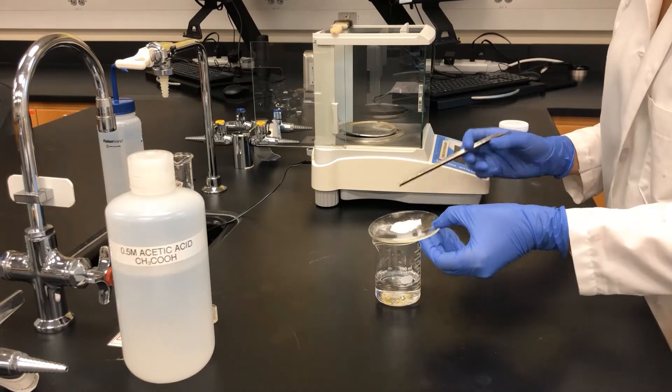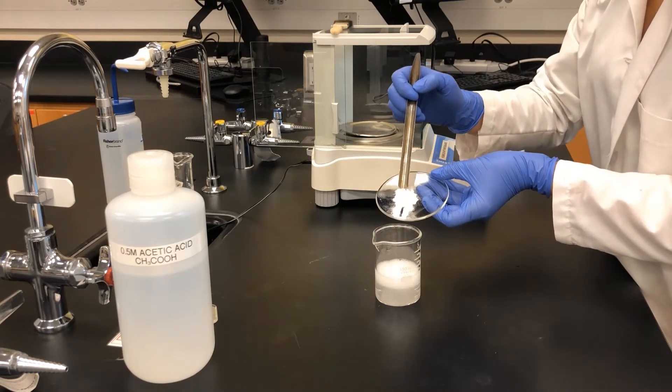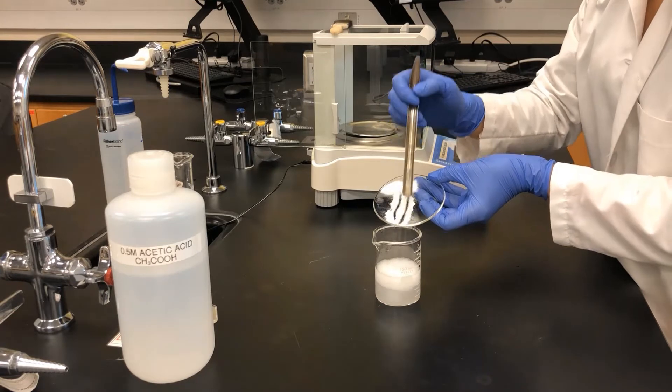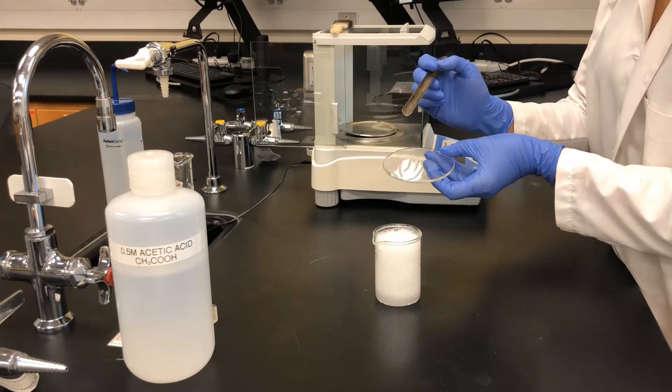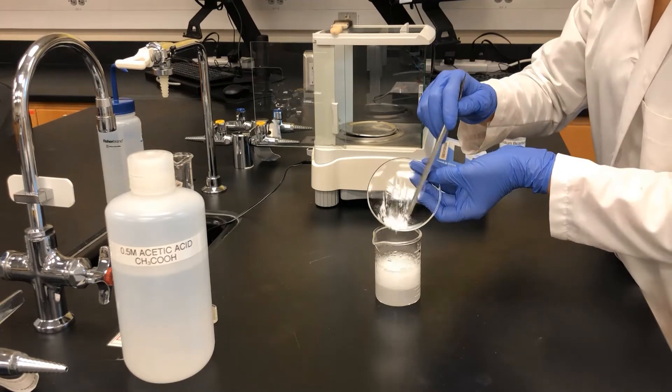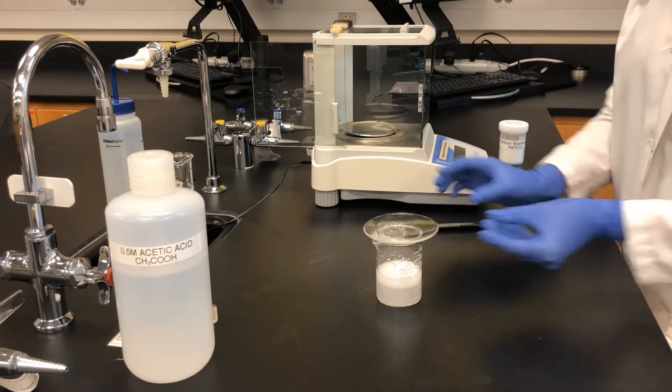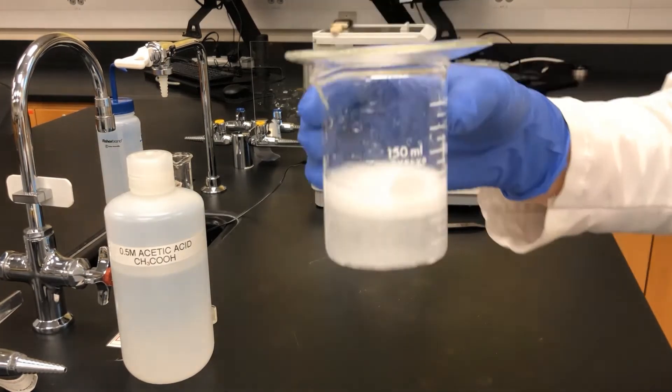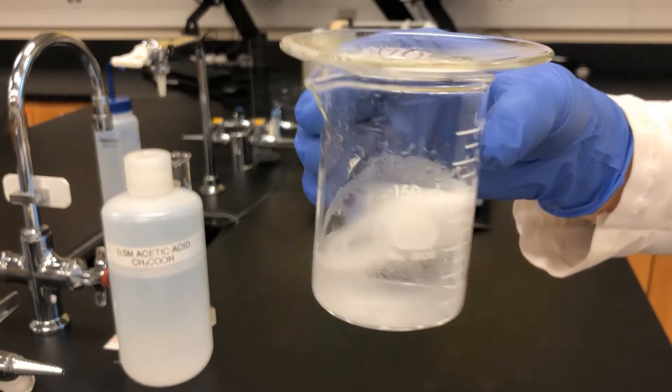A scoop is used to carefully and slowly add the sodium bicarbonate to the beaker. What is happening in the reaction? What gas do you think is being produced? To ensure that all the sodium bicarbonate reacts with the acetic acid, the beaker is swirled.